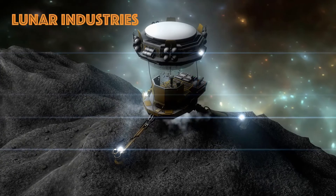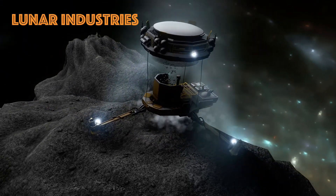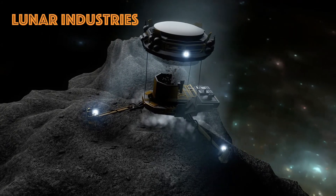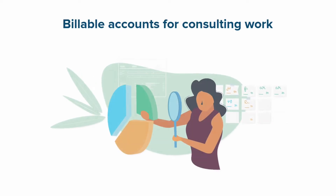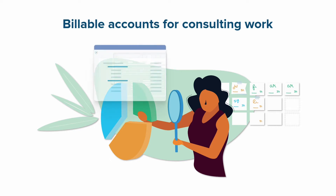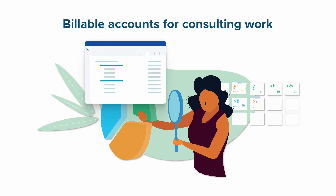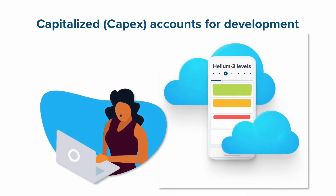I work for Lunar Industries, a large international company who does helium-3 mining on the Moon, and we use Tempo Accounts for all of these reasons. Our lunar geology and energy scientists are consultants who track their work hours with billable accounts, and the data from these accounts is used for invoicing our clients. Our development team tracks their hours spent creating our helium-3 detection app using CAPEX accounts, and the data from these accounts is used for claiming some lucrative tax credits from the government.